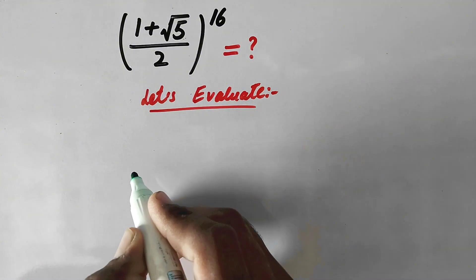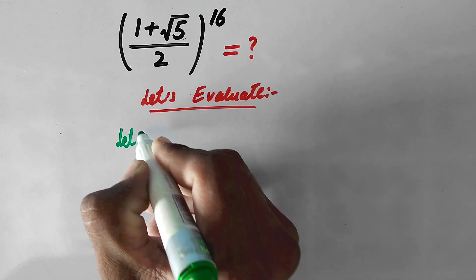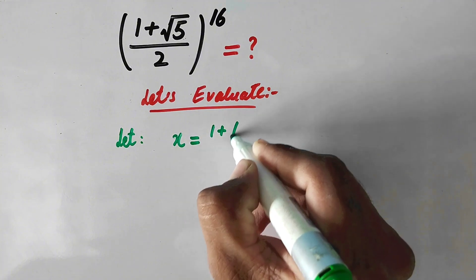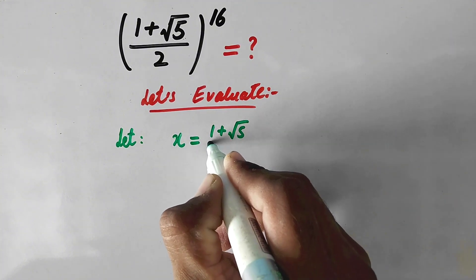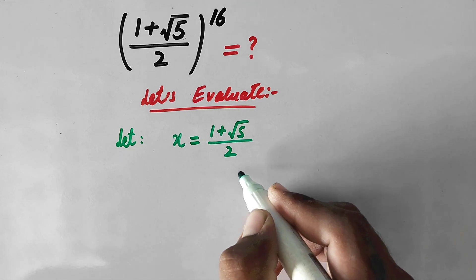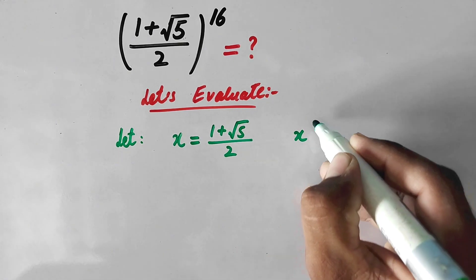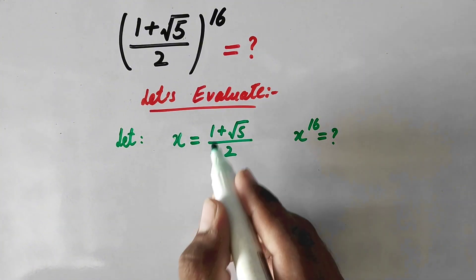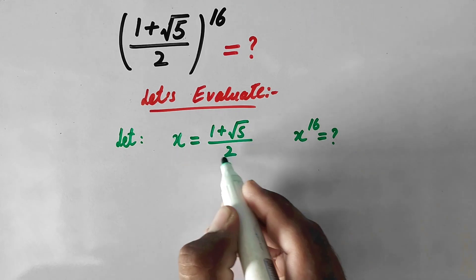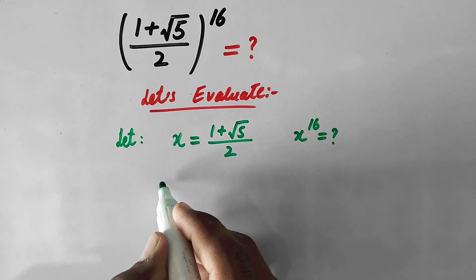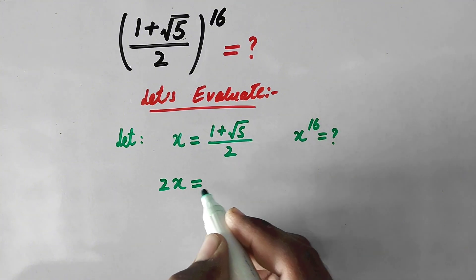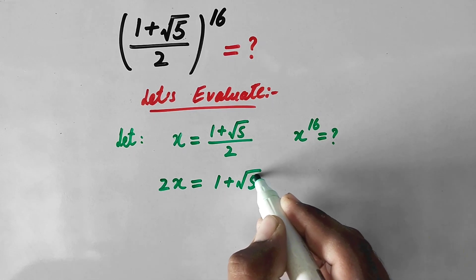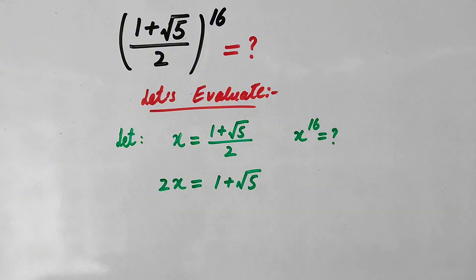From the first step, we will let x equal to (1 plus square root of 5) over 2. So we have to find x to the power 16. We will multiply 2 to the left hand side, so here we have 2x equal to 1 plus square root of 5.